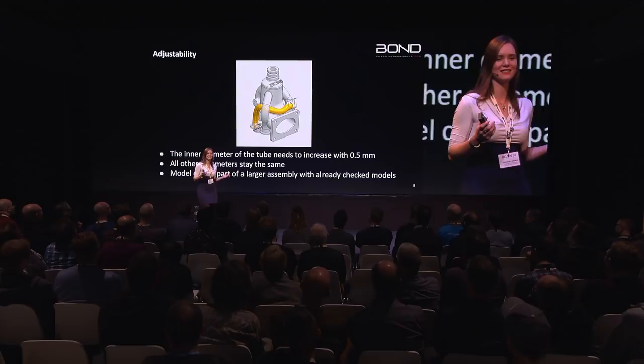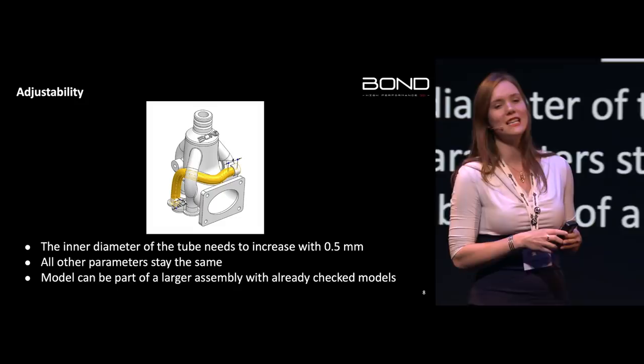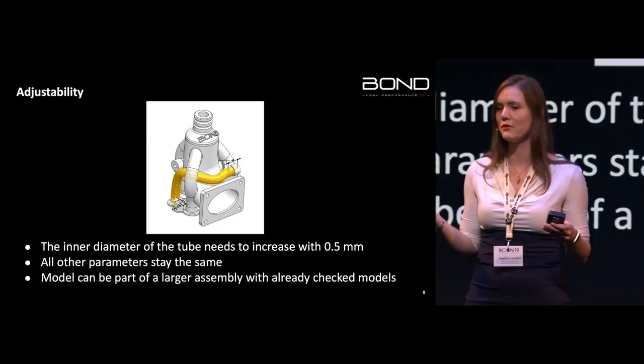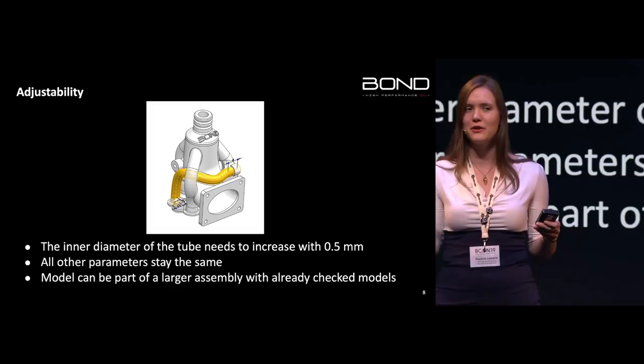Everything will need to be adjusted. Here's an example — this actually happens with a manifold. You have a tube and the diameter has to change on the inside. In CAD, that's not an issue — it's one of many parameters, you change it, it's done. In Blender, you better hope you modeled it with a modifier thickness. Otherwise, good luck.